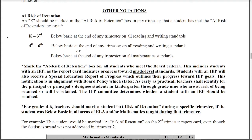For the upcoming second trimester report card, what you would want to do is look at all reading and writing standards. If a student in grades K through three is below basic in all of those areas, you would want to mark the at risk of retention box for that student.